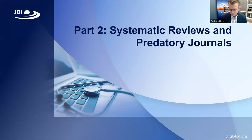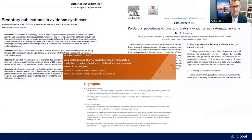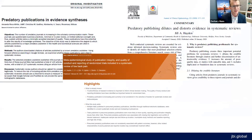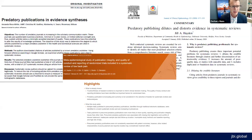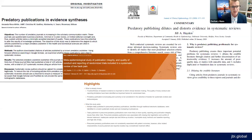We started getting an increasing amount of questions here at JBI about what we should do with studies from predatory journals in our systematic reviews. When we formed our group in 2020, there really wasn't much written on this subject — there were a handful of papers, one coming from a center in Canada, but not a lot on actual predatory journals and studies from predatory journals in evidence synthesis. There was one large meta-epidemiological study which had been conducted looking at the impact of including studies from predatory journals in systematic reviews, but really not much else at that time.